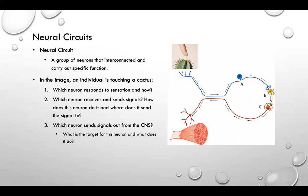Let's examine the neural circuits with the image on this slide. We will evaluate what happens when someone touches a cactus. The first question is which neuron responds to sensation and how? Viewing the image we can see that neuron A will respond to the sensation which is pain from the prickling of the cactus to the skin. It sends a signal through action potential back to the CNS.